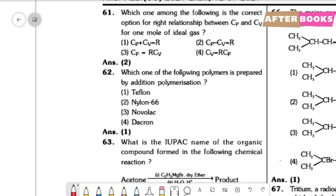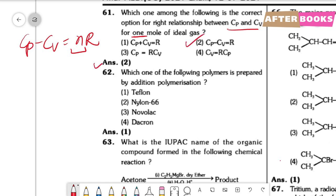Question number 61. The correct relationship between Cp and Cv for 1 mole of ideal gas. The relation is Cp − Cv = nR. Since n = 1, Cp − Cv = R, which is option 2.